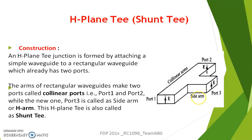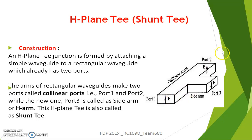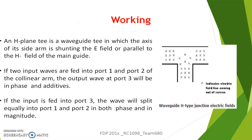Similarly, in the H-plane T — how is it constructed? It is formed by attaching a simple waveguide to a rectangular waveguide which already has two ports, port 1 and 2. The arms of the rectangular waveguide are called the collinear ports, port 1 and port 2, whereas port 3 is called the side arm or the H-arm. The H-plane T is called a shunt T because the axis of the H-plane T is parallel to the electric field of the main waveguide. If two input waves are fed to port 1 and port 2, the output will appear at port 3, which will be in phase and additive.